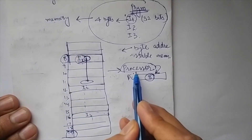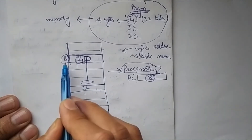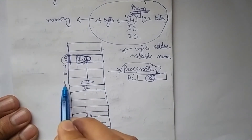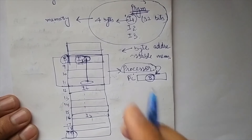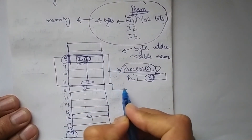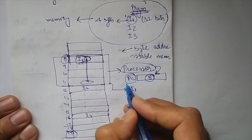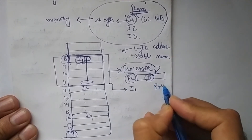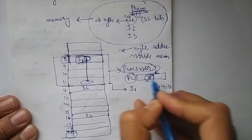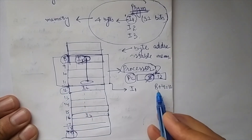The processor reads the program counter, gets address 8, goes to that memory location, and since it knows each instruction is 4 bytes, it reads bytes at addresses 8, 9, 10, and 11 to get instruction I1. At the same time, it updates the PC: current address 8 plus 4 equals 12, so the new value in the PC is 12.